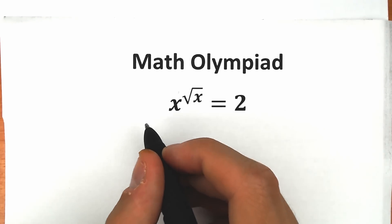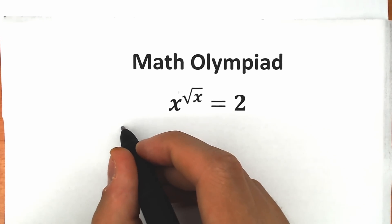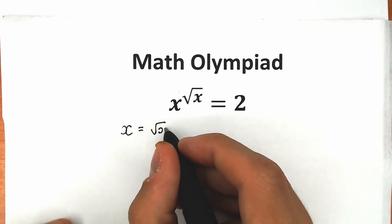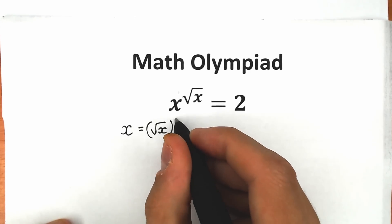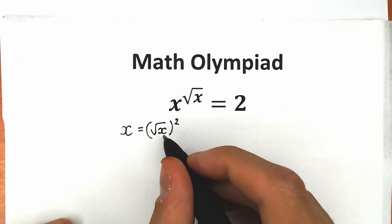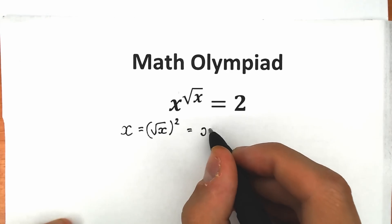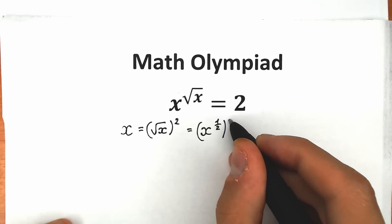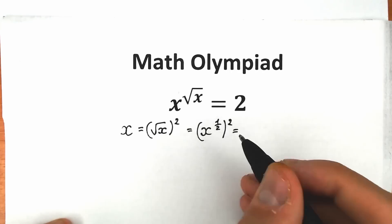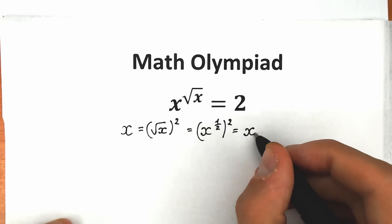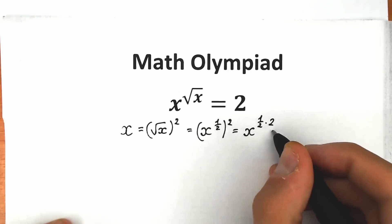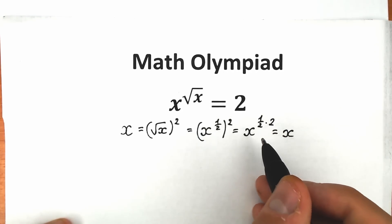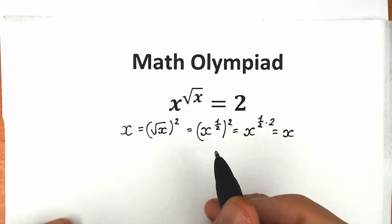First, let's rewrite x in a useful way. We have x equal to the square root of x squared. This is correct because if we rewrite square root of x as x to the power one-half, then raising it to the second power gives x to the power one-half times two, which equals x. So this is an absolutely correct expression.